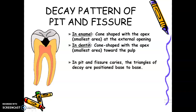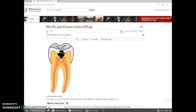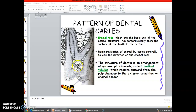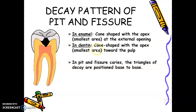When we talk about the relationship of decay in pit and fissure caries, your answer should be base to base. Base of the triangle in the enamel to base of the triangle in the dentine. So if I ask you, what is the relationship of decay in pit and fissure cavities or caries? Your answer will be base to base.